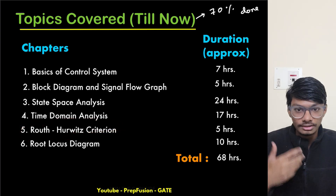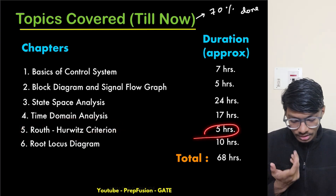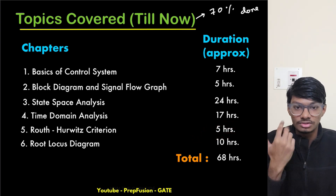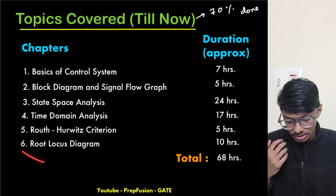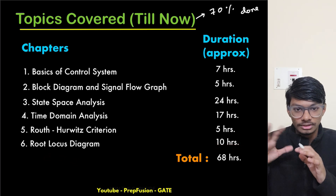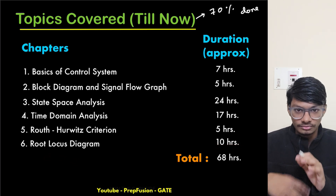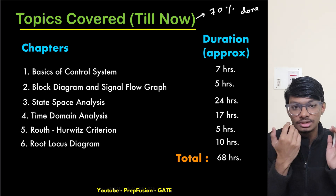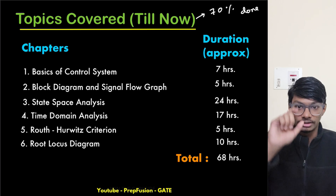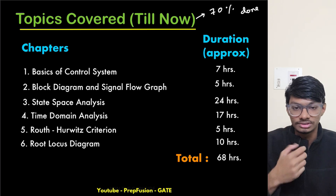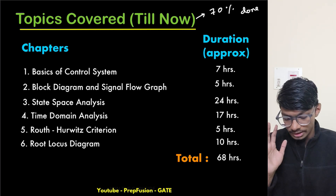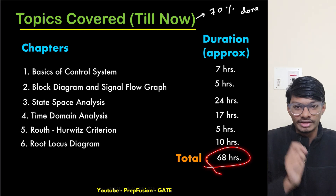Routh-Hurwitz criteria is not that long, but we have practiced enough questions and cleared common doubts about the auxiliary equation. Next, root locus diagrams are around 10 hours, with two parts: normal root locus with negative feedback and complementary root locus with positive feedback. I have covered all the steps for plotting a root locus with full details.